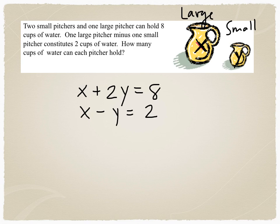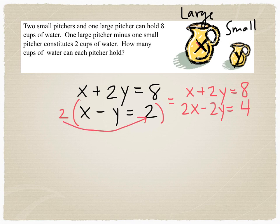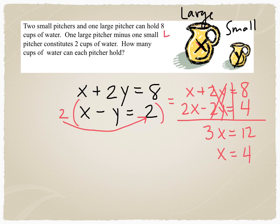Now this one is not set up for elimination either. However, I can very quickly set it up for elimination in one of two ways. I could multiply the bottom equation by negative 1, or I could multiply the bottom equation by positive 2. Either way, I will eliminate. If I multiply by positive 2, I will eliminate the Y's. So 2X minus 2Y equals 4. Add straight down. The Y's are going to cancel. 3X equals 12. So X equals 4. The large pitcher holds 4 cups of water.